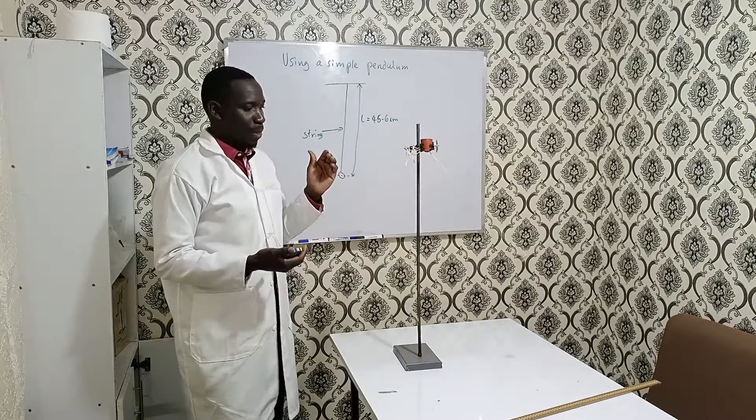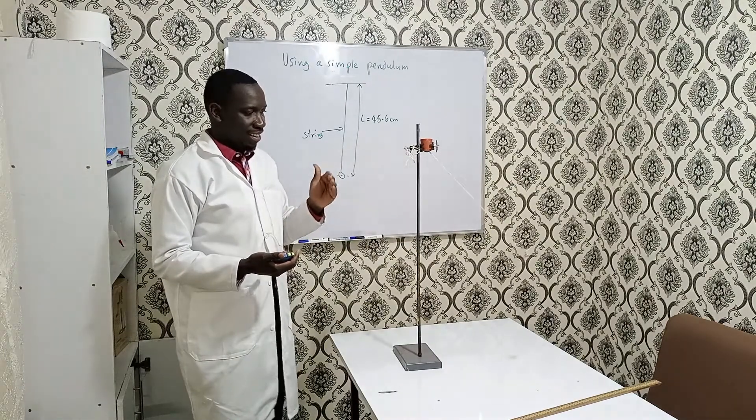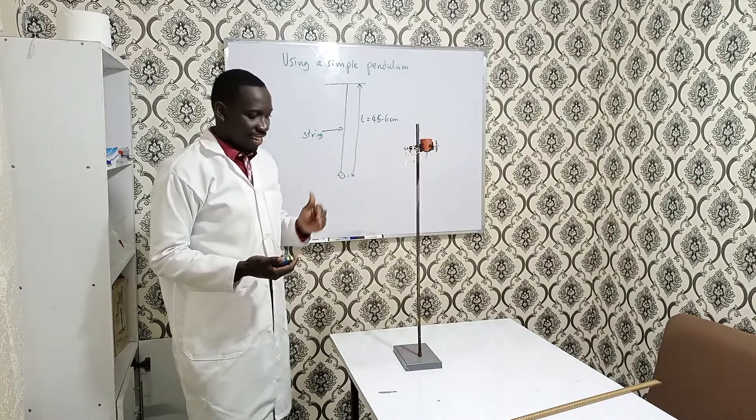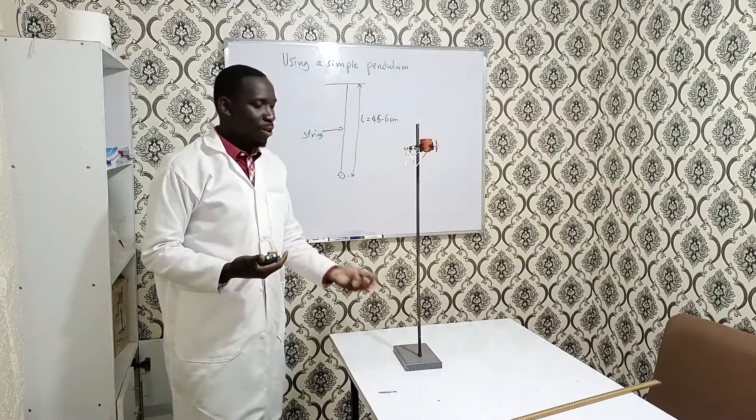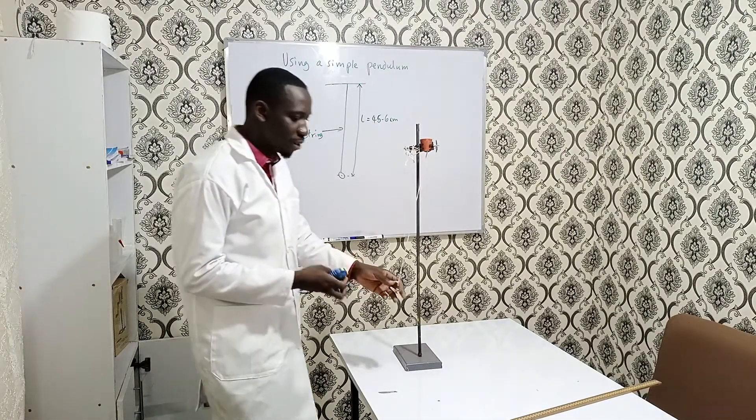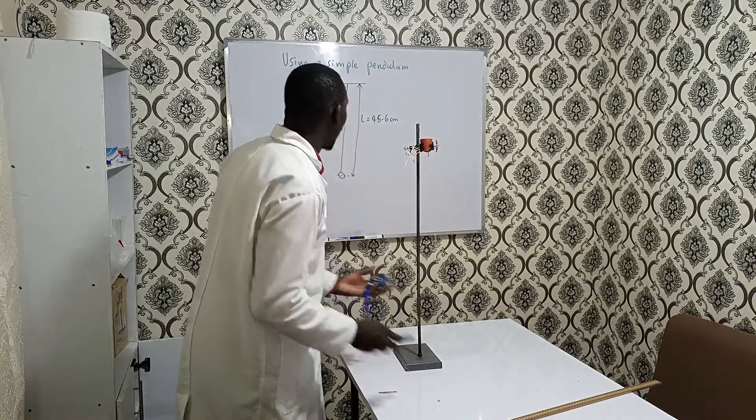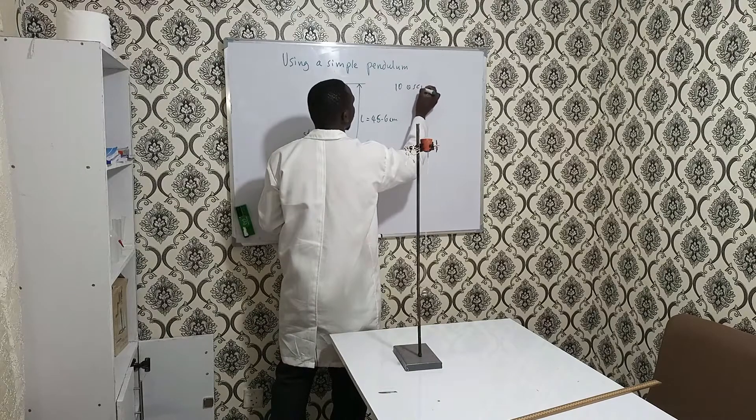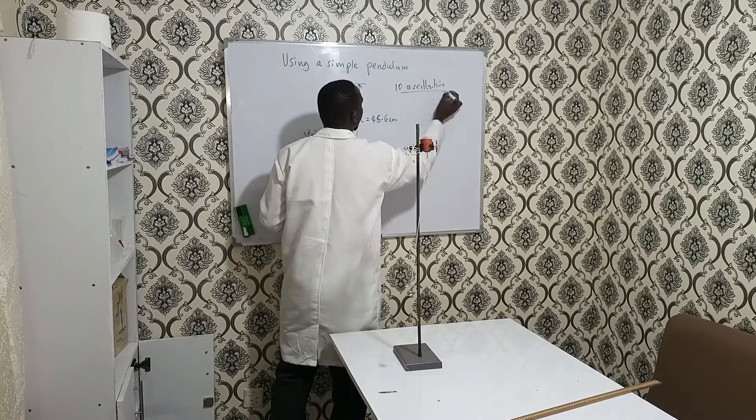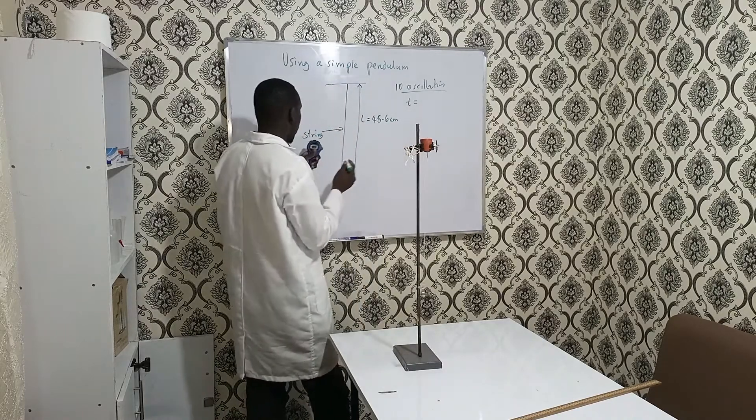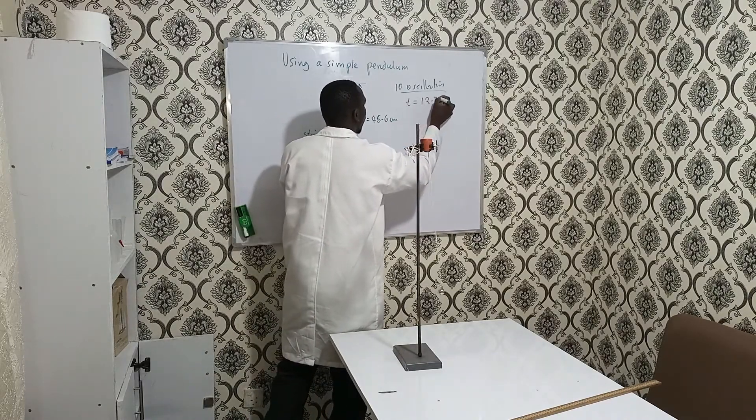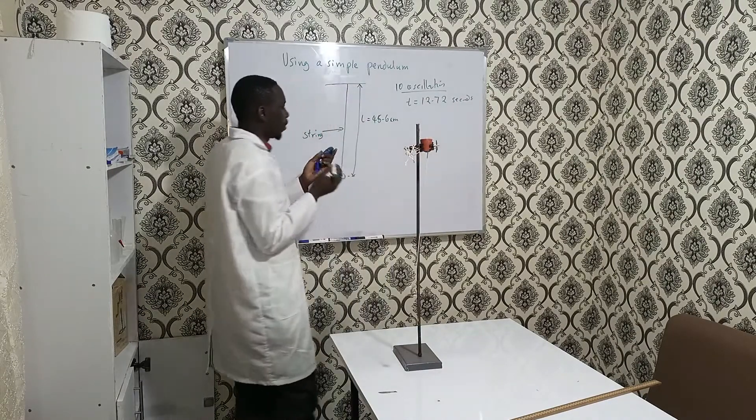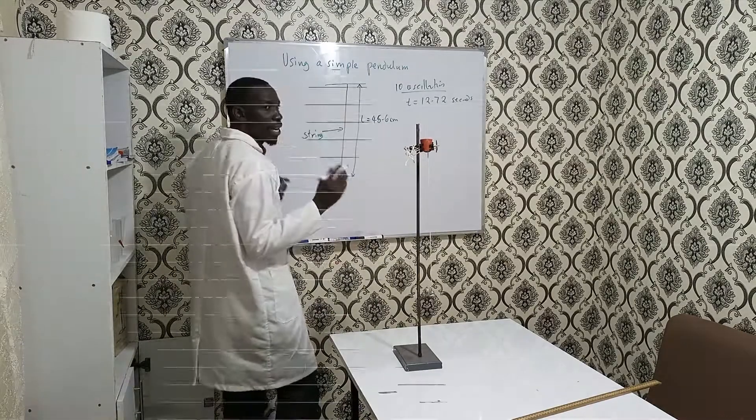When I release it, that is it. When I'm ready, I take the measurement. I can count: that can be zero, then one, two, three, four, five, six, seven, eight, nine, ten. Let's say I want to take the measurement for 10 oscillations. For 10 oscillations, the time that I'm having here is 12.72 seconds.